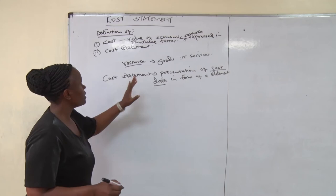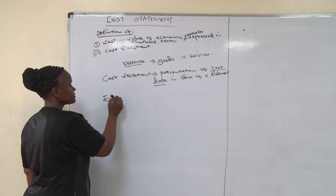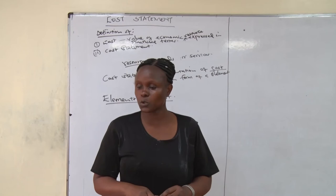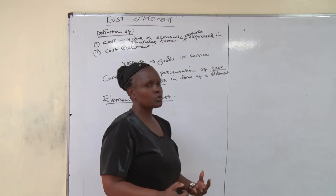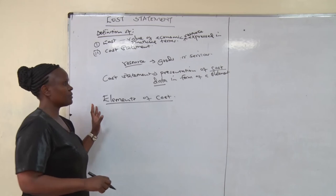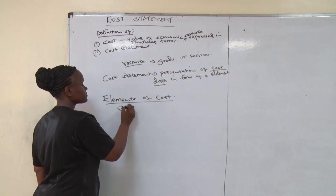Before we look at the format of the cost statement, I would like us to look at the elements of cost. In costing, most organizations cost their products according to how much they use to produce the commodity — that's the production cost. To get the total cost of production, you must understand the elements of cost. We have three main elements of cost.